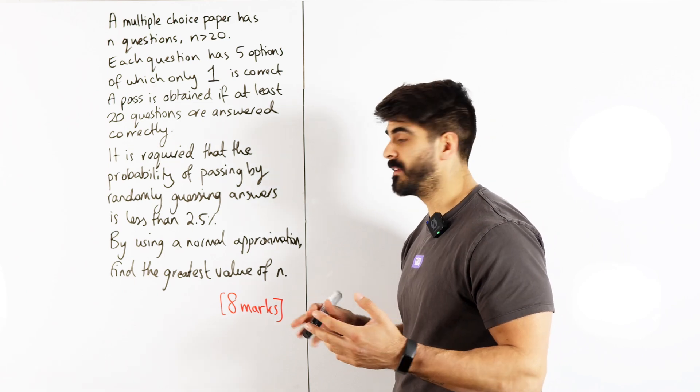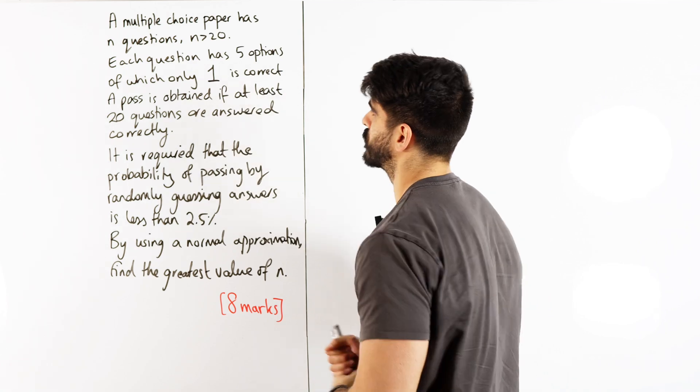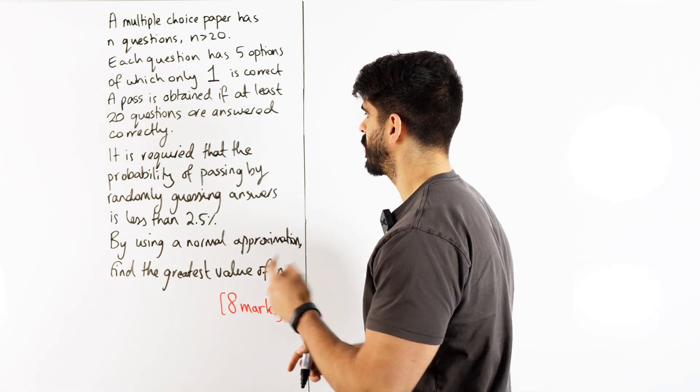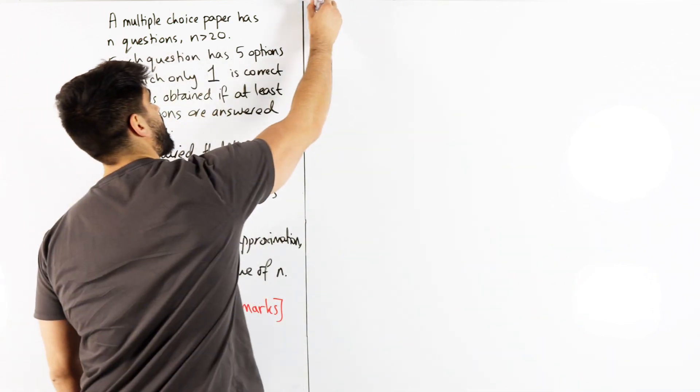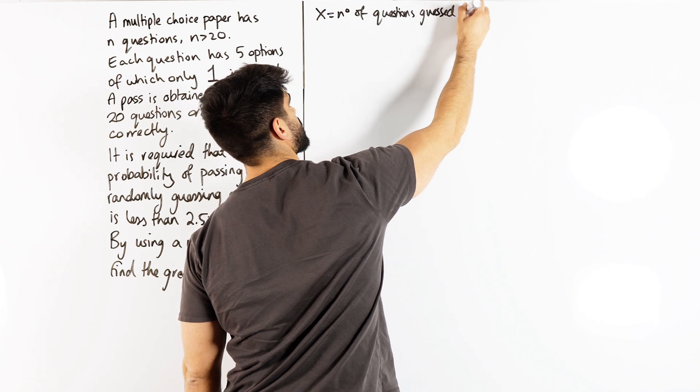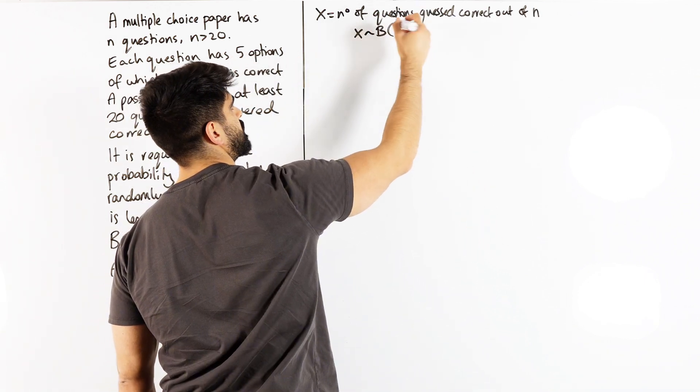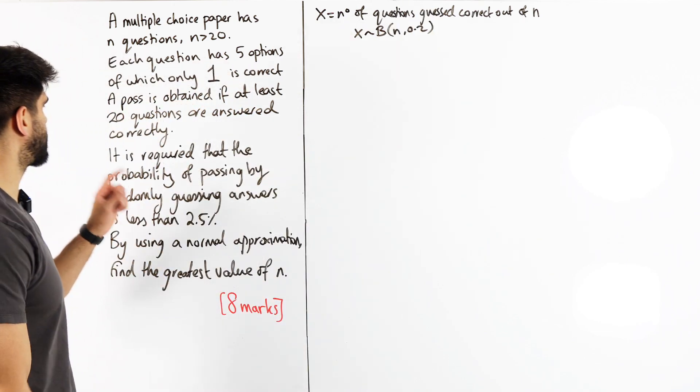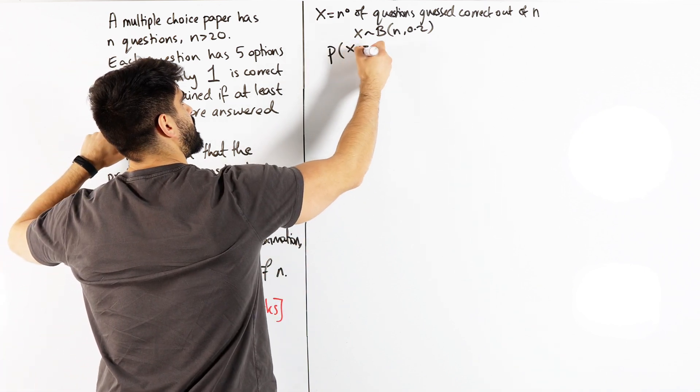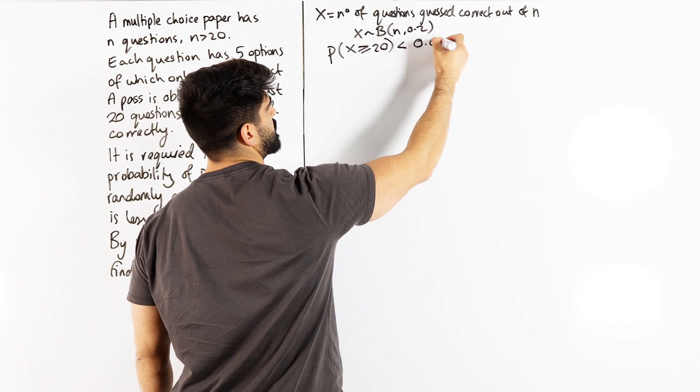Well even though they said find a normal approximation, the first thing we should be doing is sticking with what this is actually to do with and that's a binomial distribution. We have n questions, either you're correct or not. The only thing is what's the probability of getting any question correct? Well we are guessing and they are saying it's random so there's a 1 out of 5 chance which is 0.2. So let's just define x. x is the number of questions guessed correct out of n. x is binomially distributed n and 0.2. Now they want us to fix the situation such that the probability of getting at least 20 questions correct, so they want the probability of x being at least 20 being correct to be less than 2.5 percent which is less than 0.025.